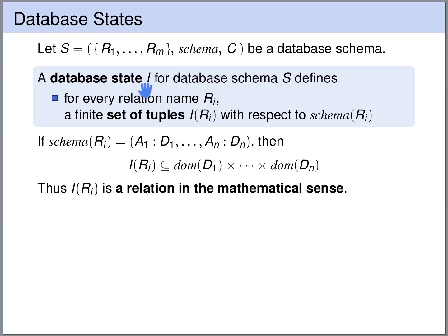Then a database state I for database schema S defines, for every relation name R_i in the schema, a set of tuples I(R_i) with respect to the schema of R_i.